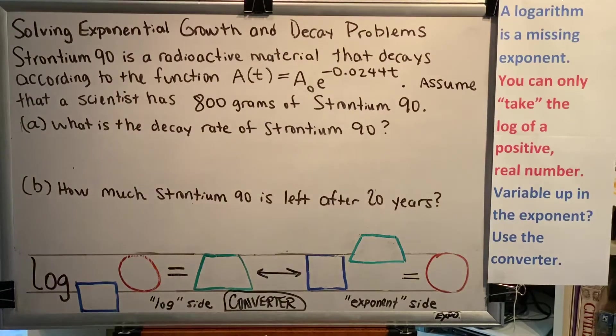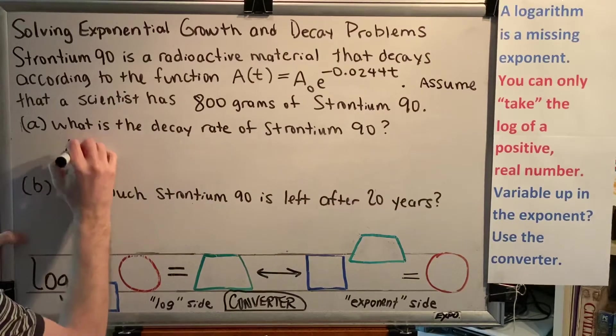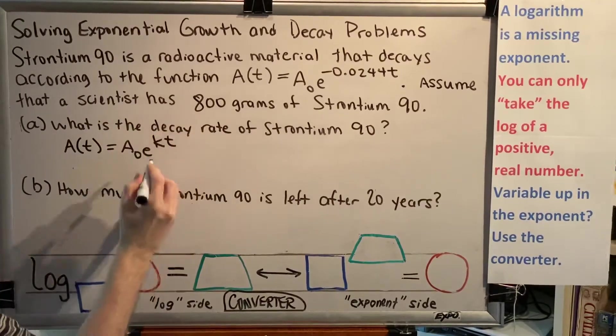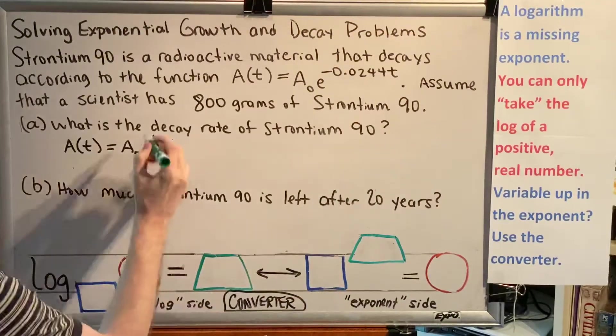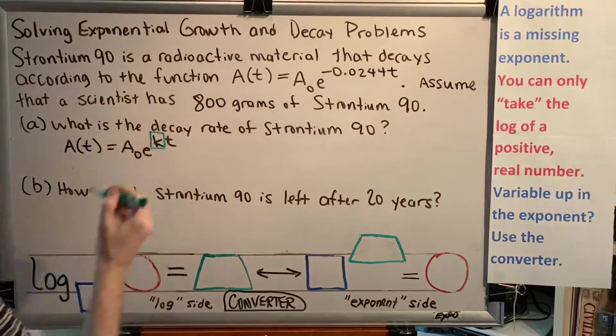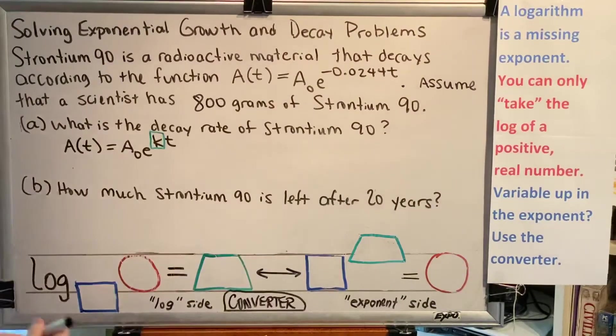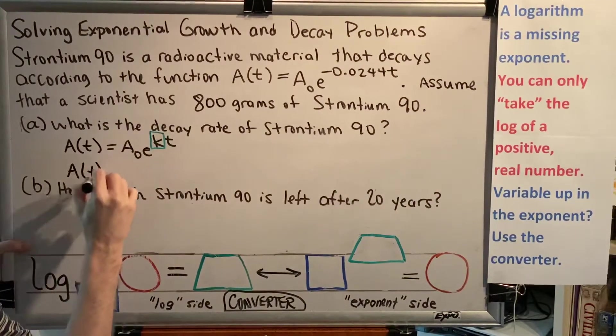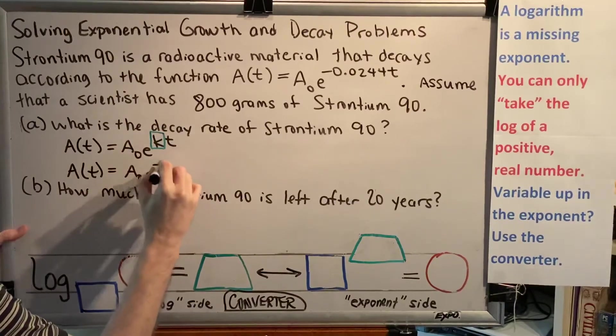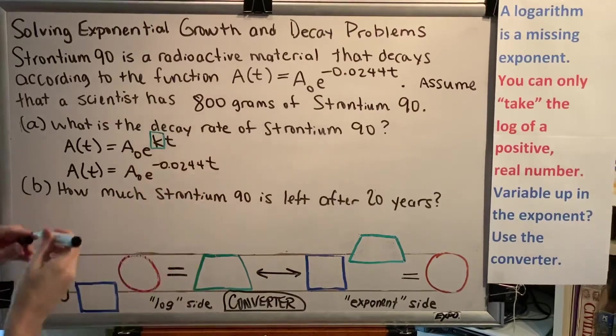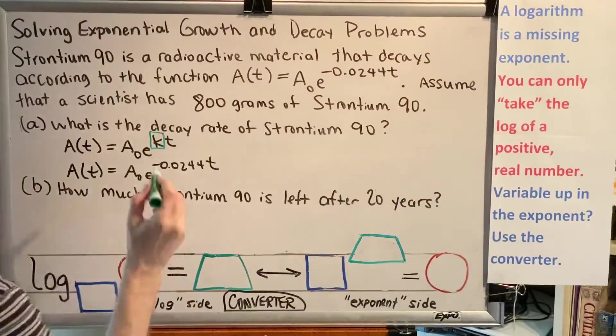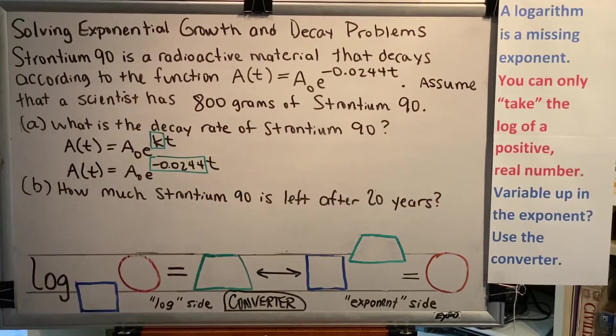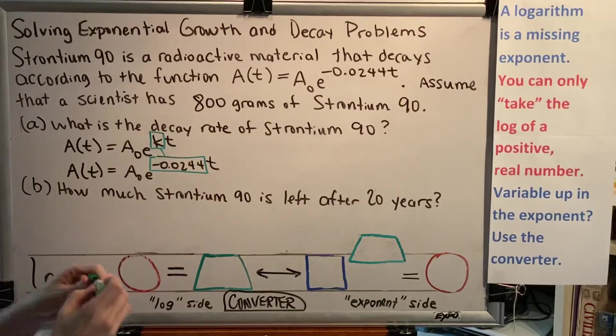Part A: What is the decay rate of Strontium-90? To answer this question, we have to know a little bit of math vocabulary. In the exponential law equation, k, shown here next to the exponent t, is called the growth or the decay rate. So whenever someone asks you what is the growth or the decay rate, what they're really asking you is what is this number that's sitting next to t? So if we take the equation that they gave us and we look closely, we can see that the number in the equation next to t is negative 0.0244. So that is the decay rate.